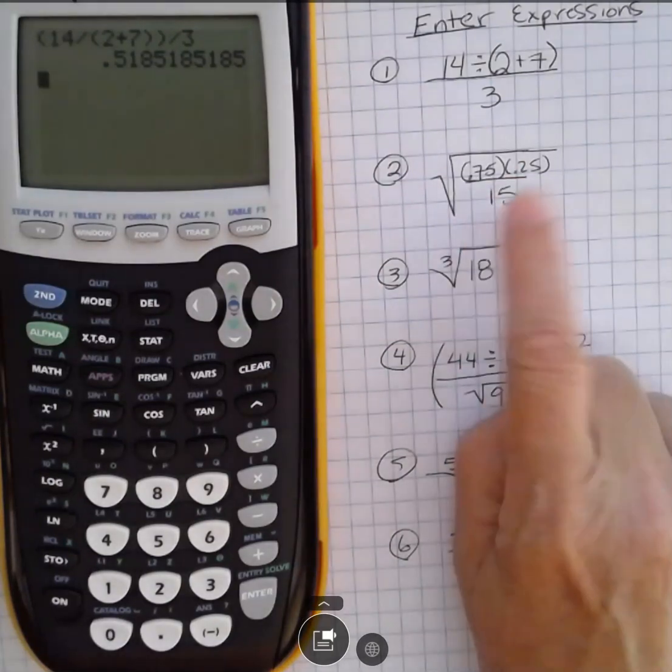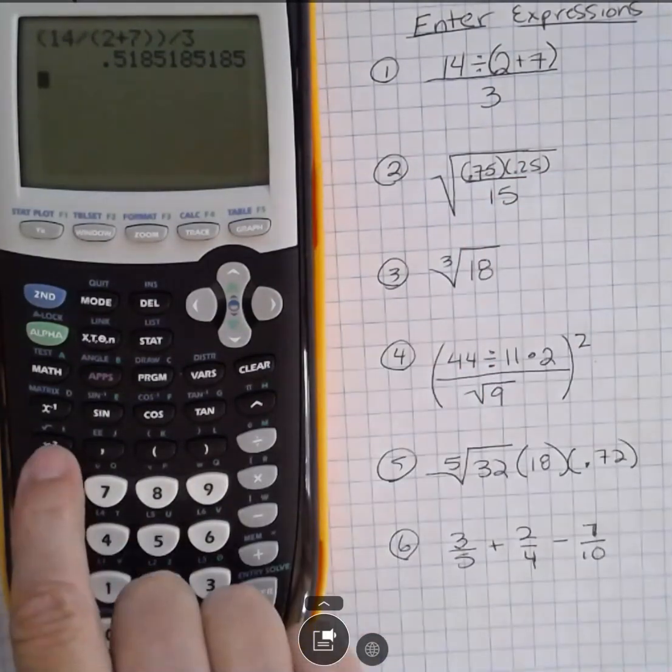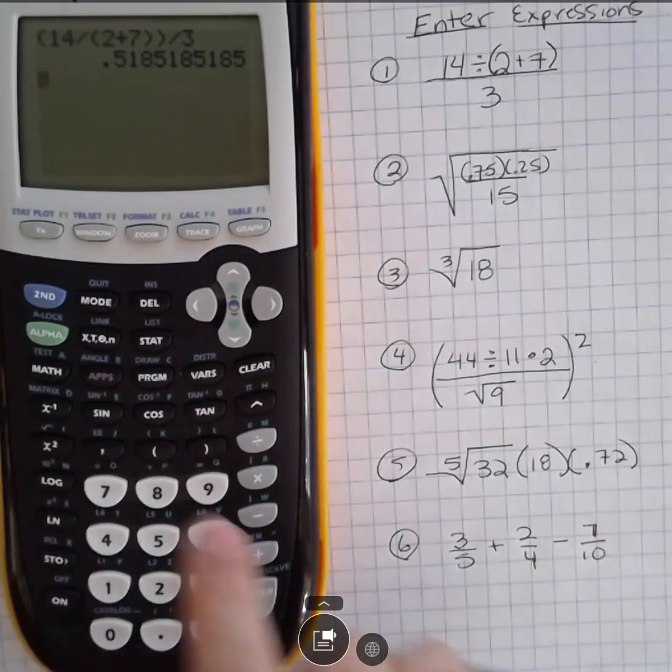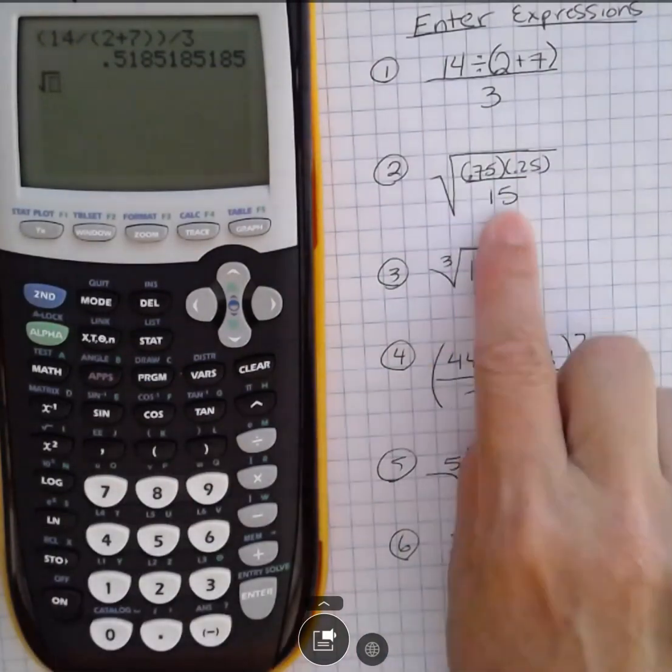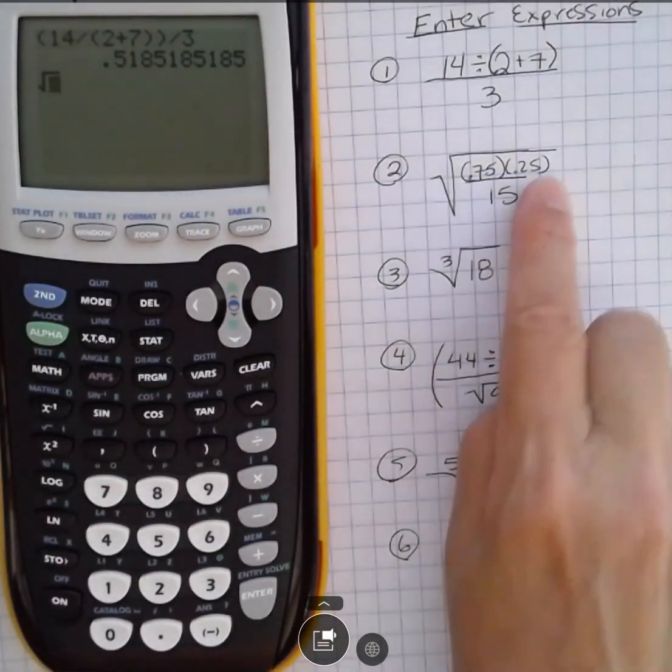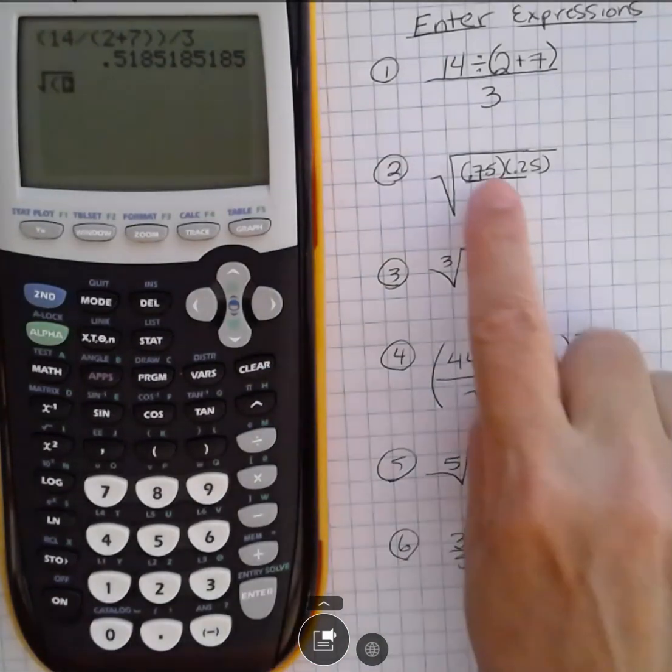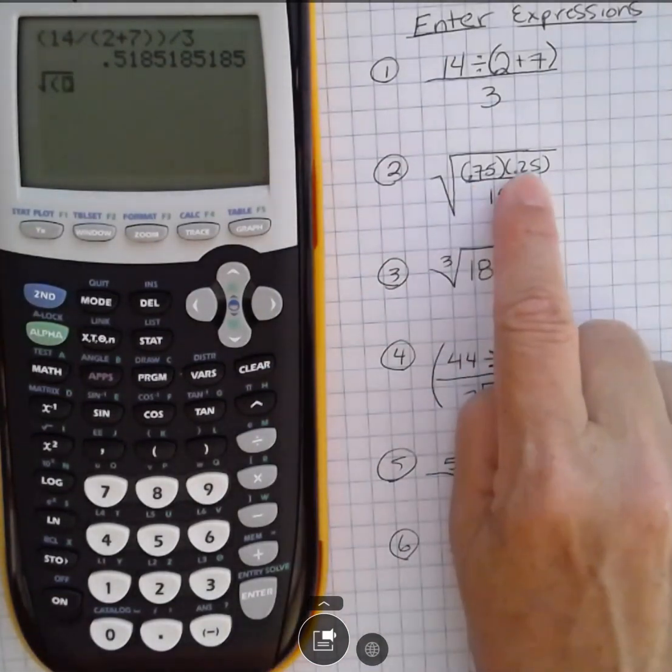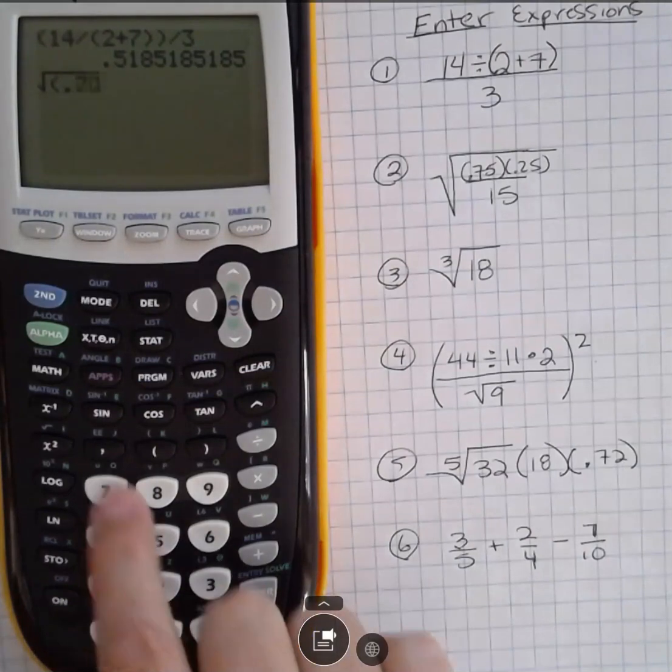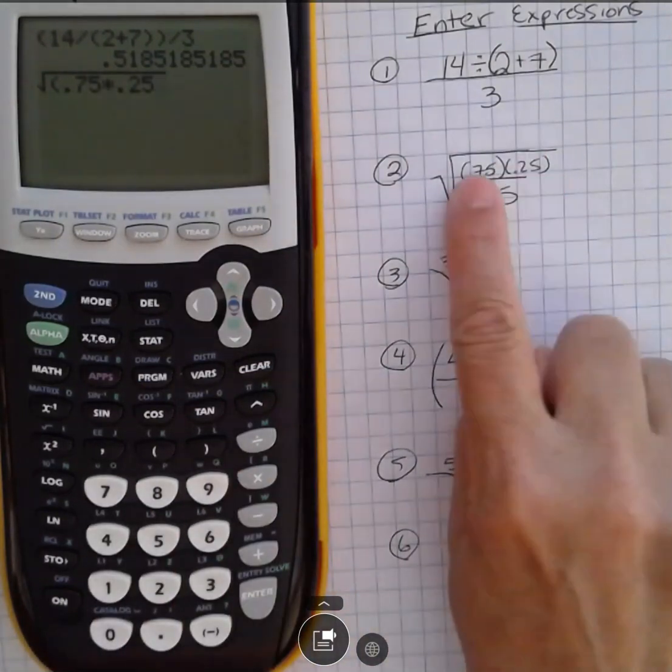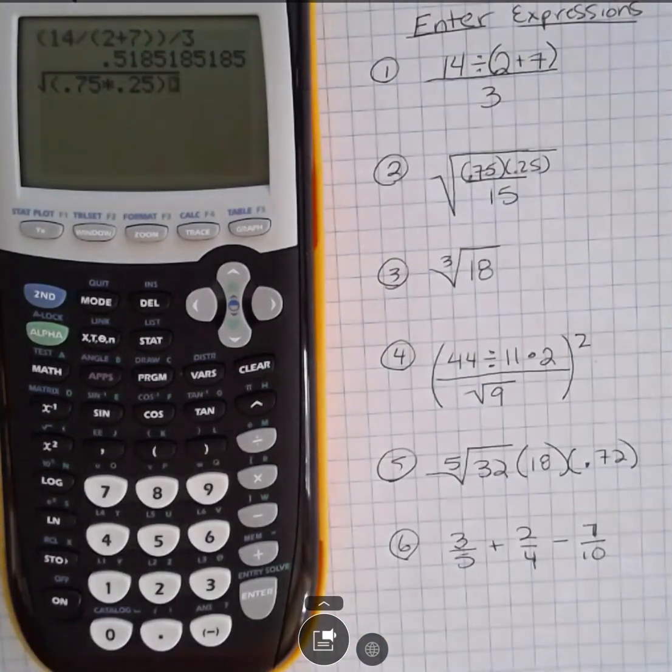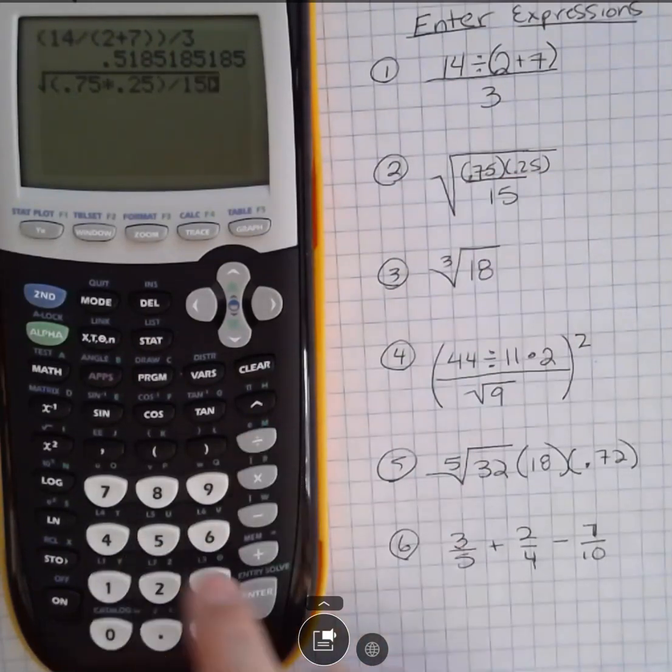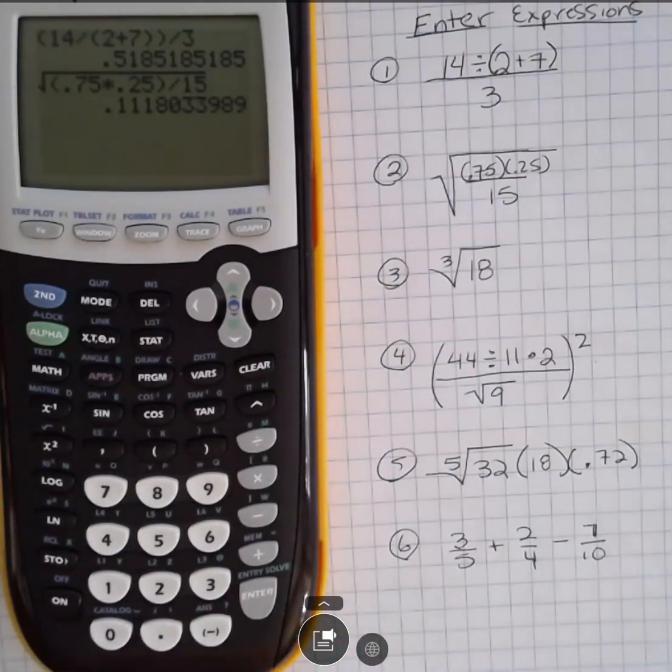In the second one, we want to do some stuff under a square root. We're going to use that square root button that's above the x squared, so second function x squared, and then we're going to put in a fraction in that. So again, the top I want to be in parentheses. I could put both of these in parentheses like I have here, or I could also just say 0.75 times 0.25. That's what that means anyway, so rather than enter all those parentheses I could just do this. But now I'm finished with the numerator under here, so I'm going to divide by 15 and hit enter to get that answer.